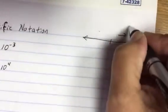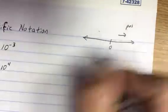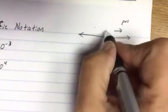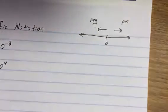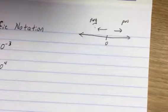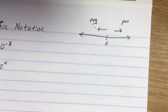Now this direction from zero was positive, right? But if we moved this direction we were now into the negatives. Well that is how scientific notation works.